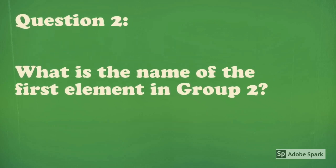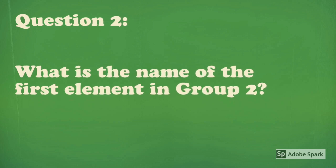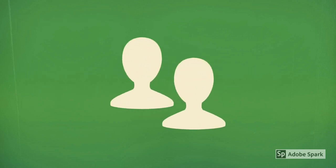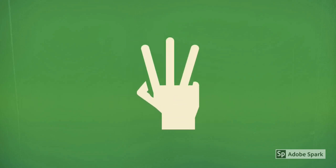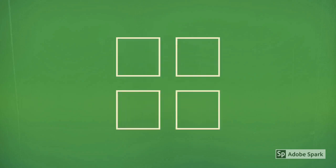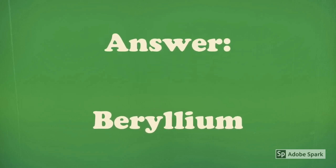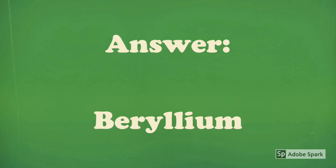Question 2: What is the name of the first element in Group 2? Answer: The first element in Group 2 is Beryllium.